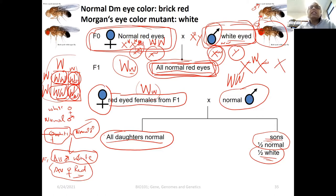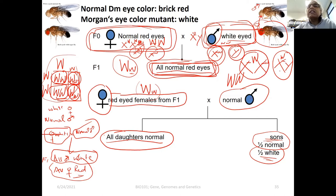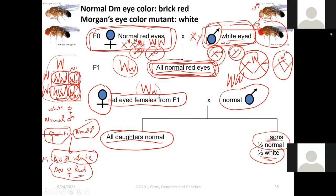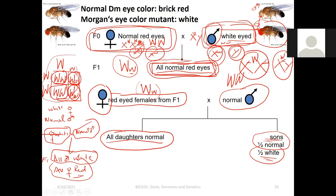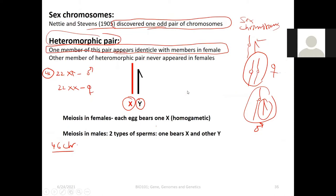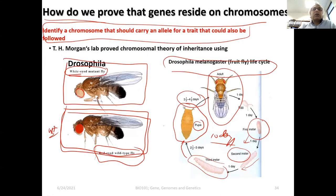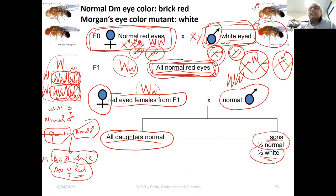This was the discovery of sex-linked inheritance and sex chromosomes. Morgan's lab concluded that X and Y are sex chromosomes involved in determination of sex of the fly, and the gene for eye color is on the X chromosome while Y does not contain any eye color gene. That's what explained half sons normal and half sons white.